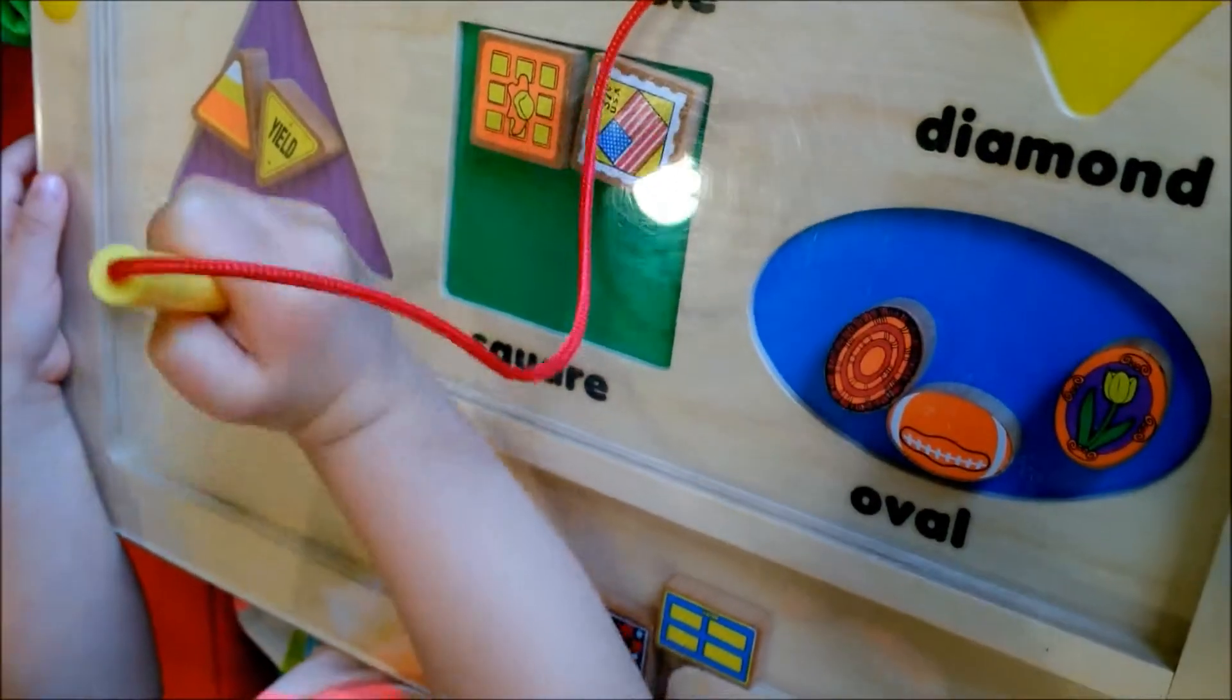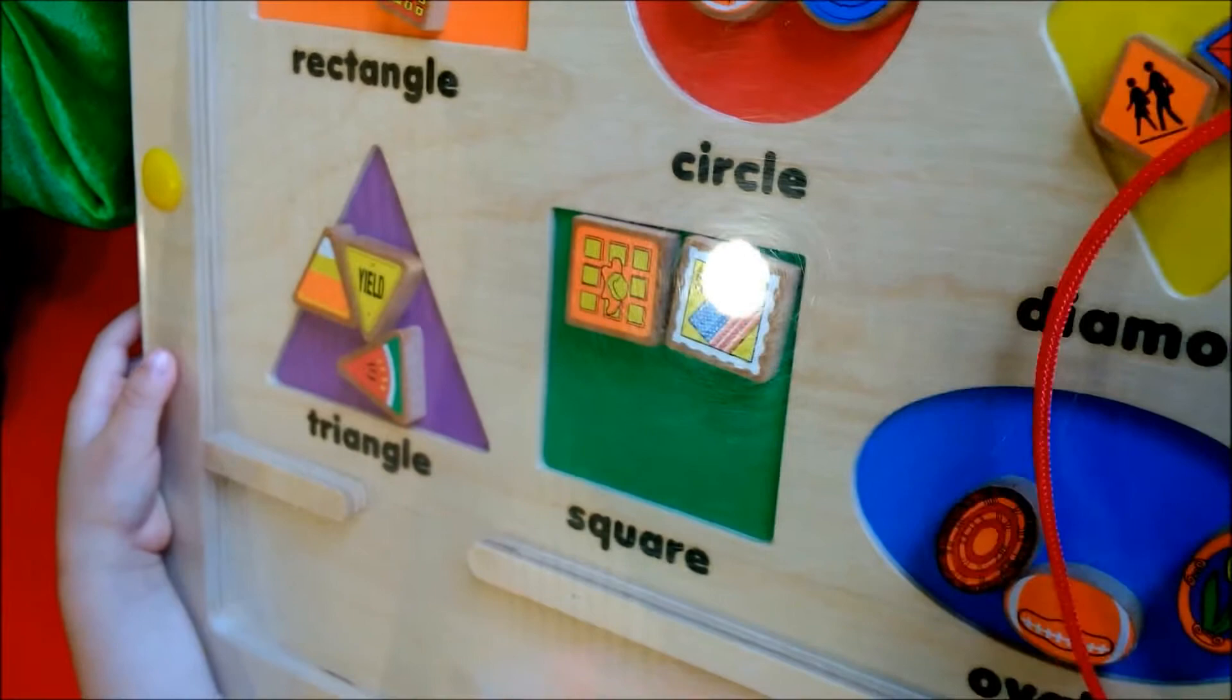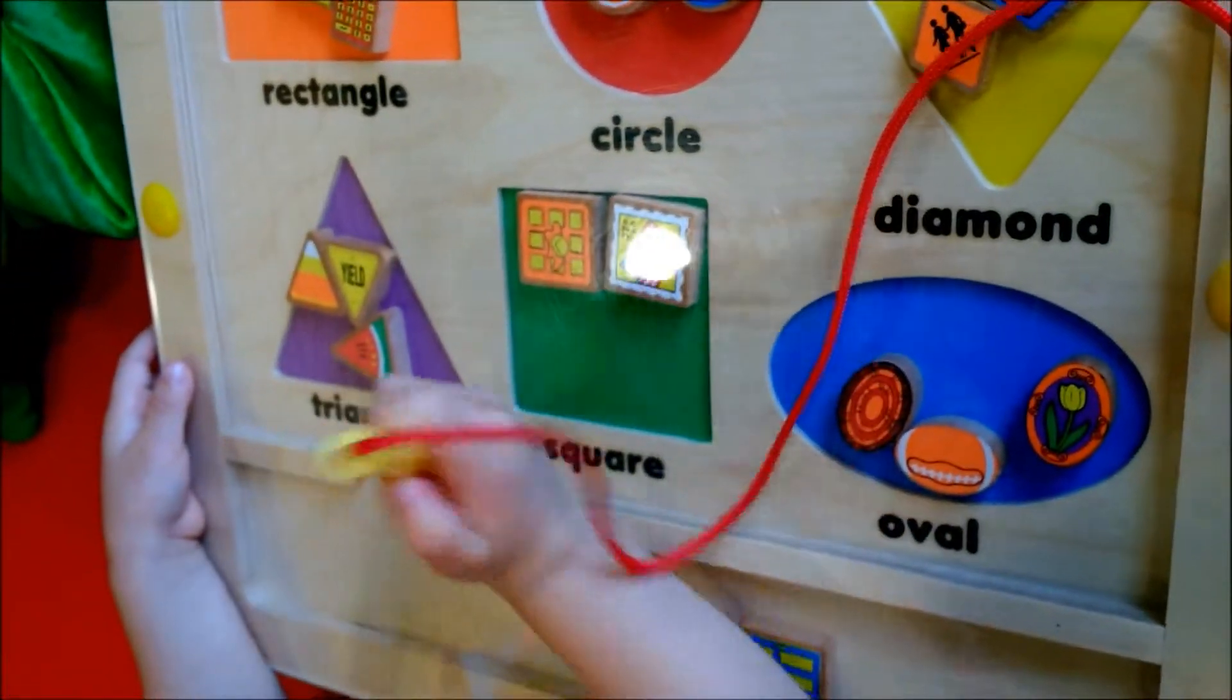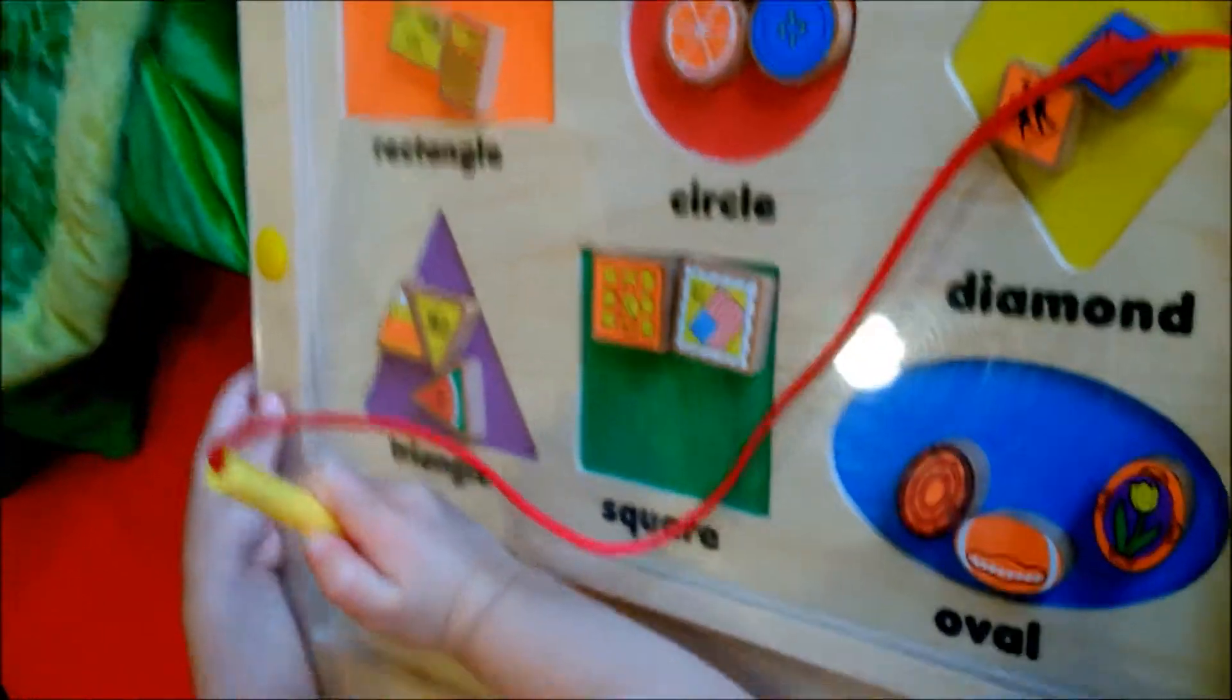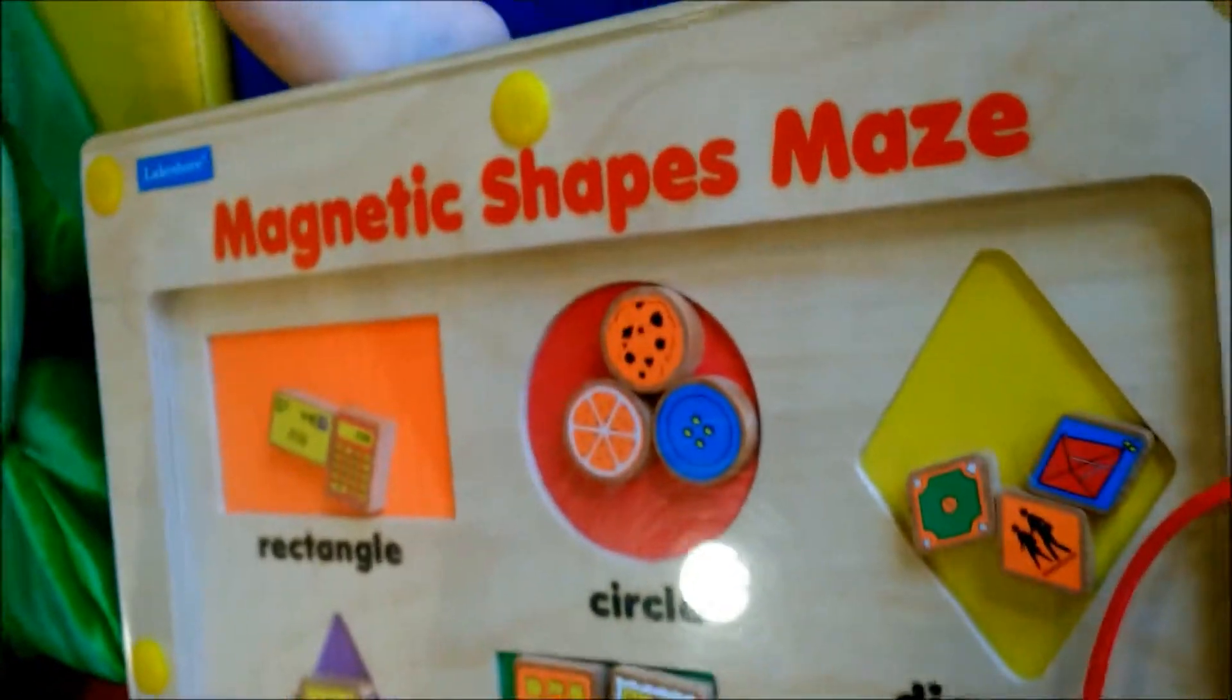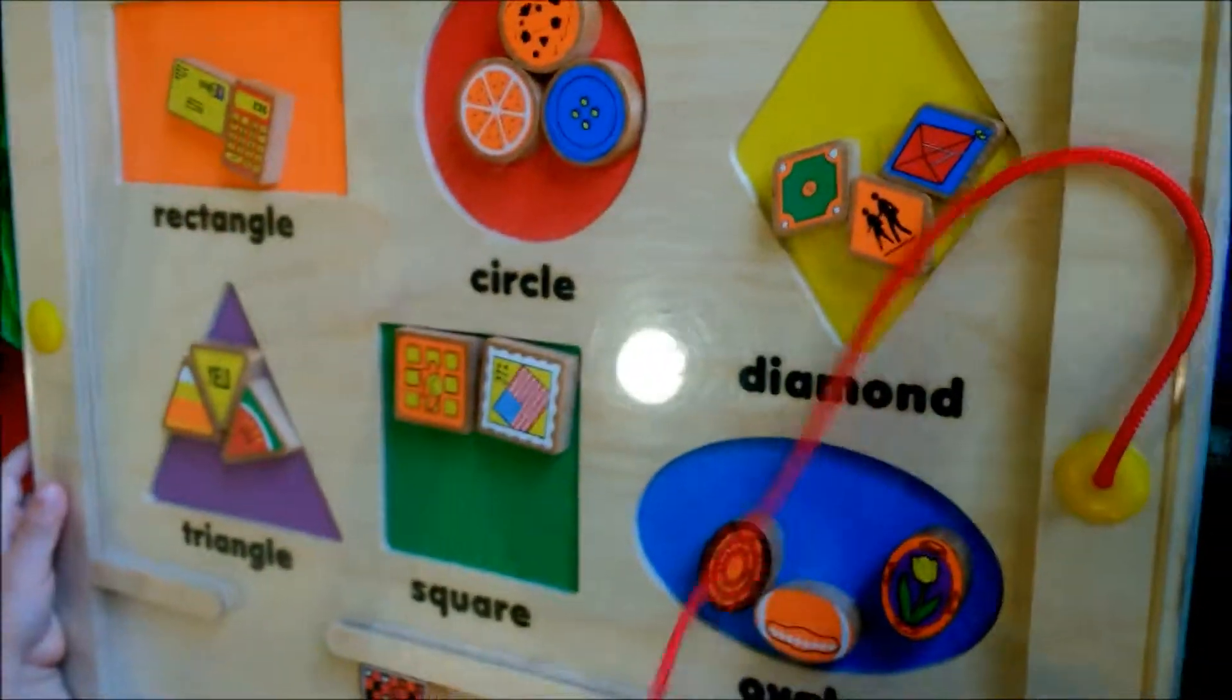What's that one? Good job. Triangle. What's next? Can you find? What's that one? Red. It's also good for your motor skill to move the shapes.